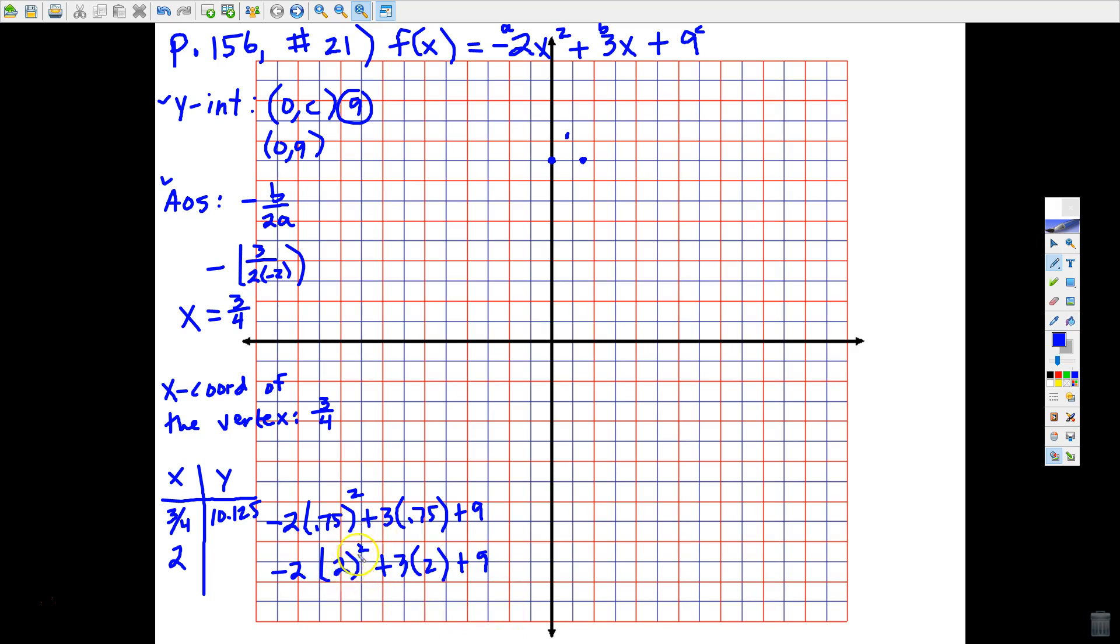Remember to square first, so that's 4. 4 times negative 2 is negative 8, plus 6, plus 9. Negative 8 plus 6 is negative 2, plus 9 is positive 7. So the point (2,7) is on the graph.